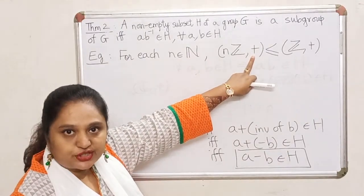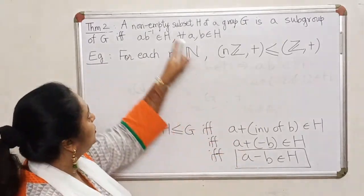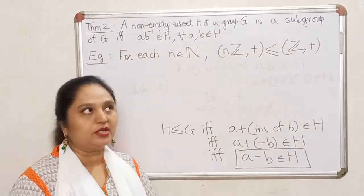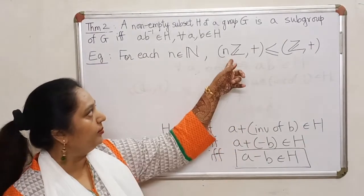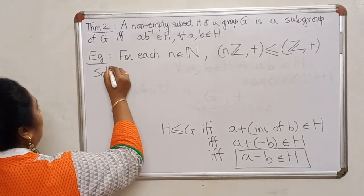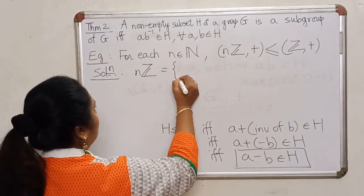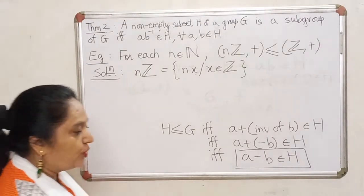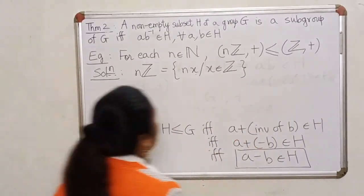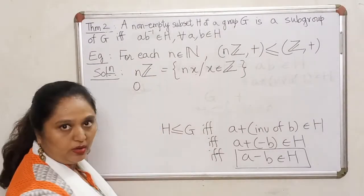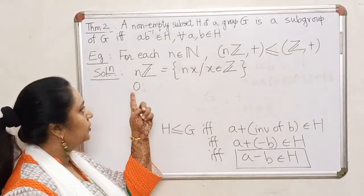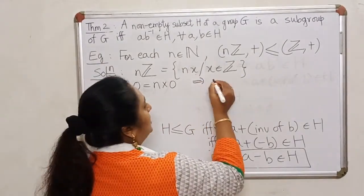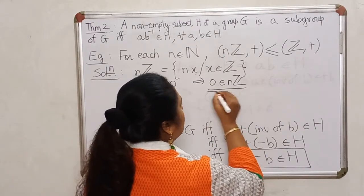Since the group operation is addition, the necessary and sufficient condition of Theorem 2 applies. Before verifying any condition, always check that the identity element belongs to the given set. The identity for addition is 0. The elements of NZ are of the form N times some integer. Since 0 = N×0, it is a multiple of N, and therefore 0 belongs to NZ.